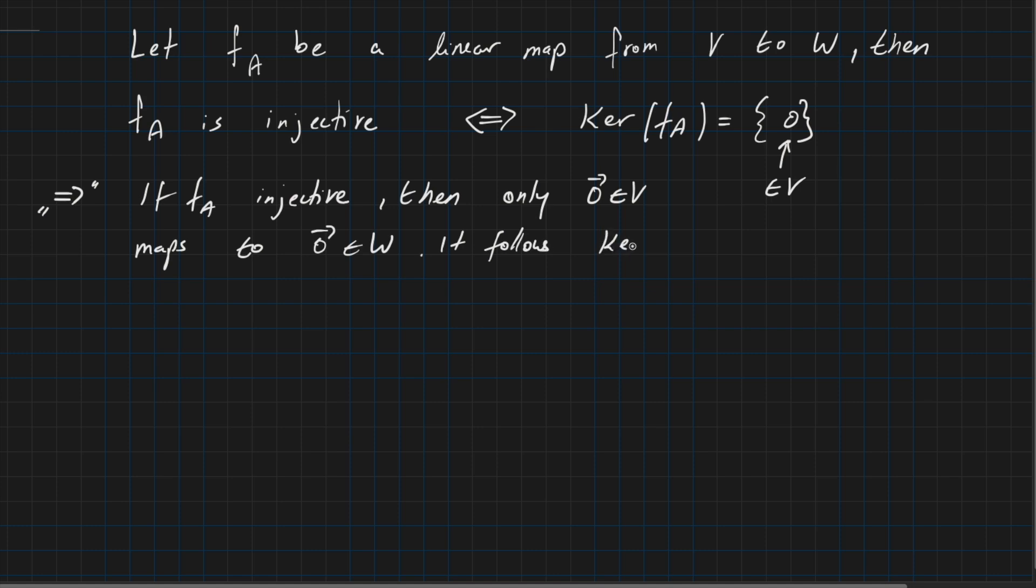It follows Ker(FA) is exactly 0, because 0 is always included. There cannot be more elements than 0 in the pre-image of 0, because FA is injective. For this reason the kernel of FA is exactly 0.